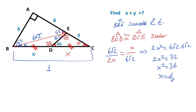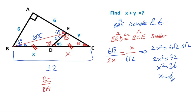Therefore the length of BC must equal 12 units. Notice that the ratio of these two sides equals 2. The length of BC over the length of BA equals 2, which means theta equals 30 degrees.